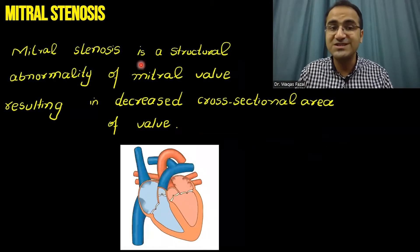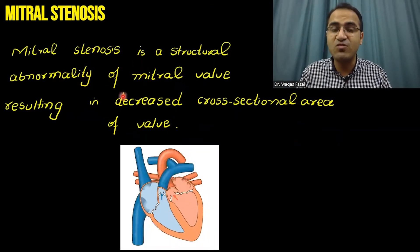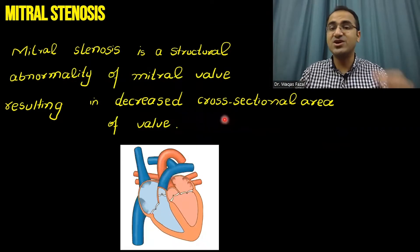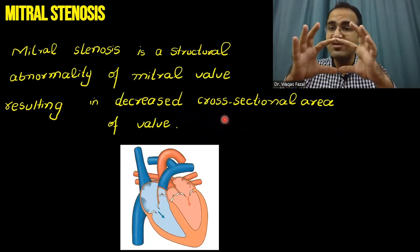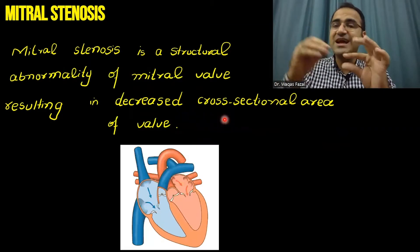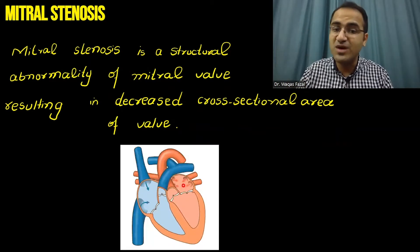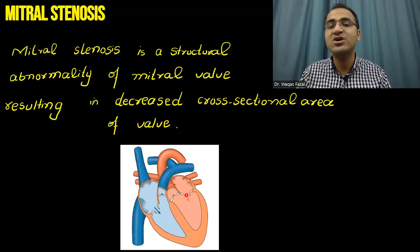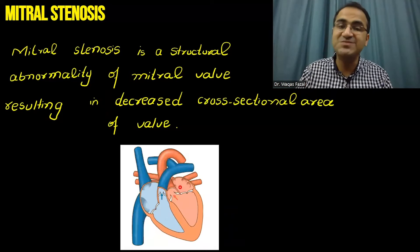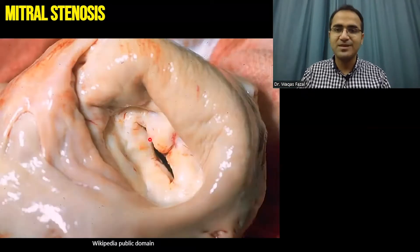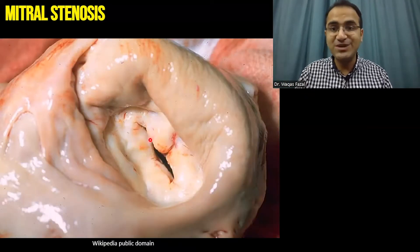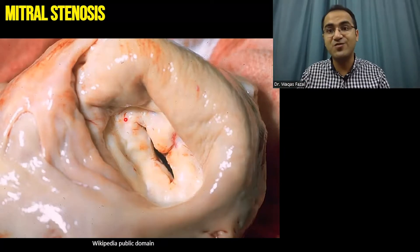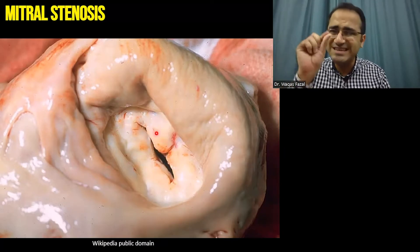Mitral stenosis is a structural abnormality of the mitral valve resulting in decreased cross-sectional area. The cross-sectional area of the mitral valve is decreased and there is difficulty for the blood to pass from the left atrium to the left ventricle. Therefore, the blood is backed up in the lungs. This picture shows mitral stenosis — look at the circumference of this heart valve; it has decreased.